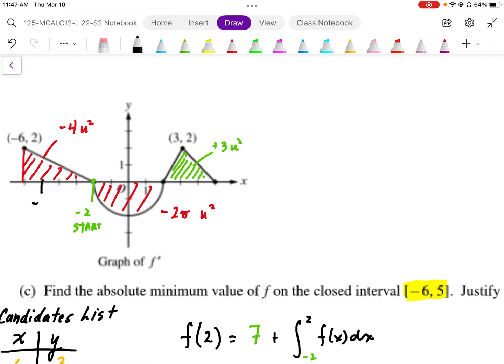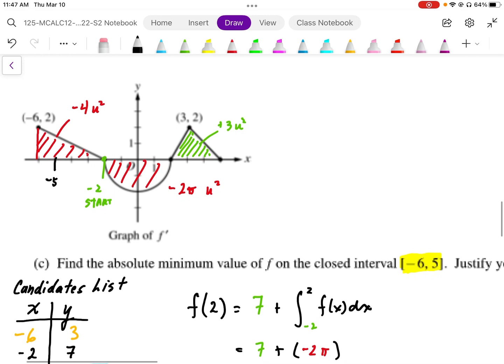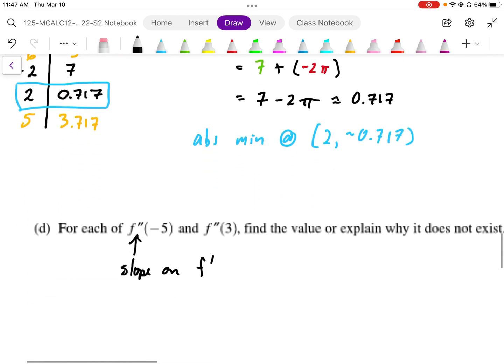So if I take a look at the F prime graph at negative 5, right about here, the slope is negative, and that's a straight line. So we can see that the slope is going to be negative 2 over... looks like negative 2 over 4. So F double prime at negative 5 is equal to the slope on F prime at x equals negative 5, and that gives us a slope of negative 1 half.